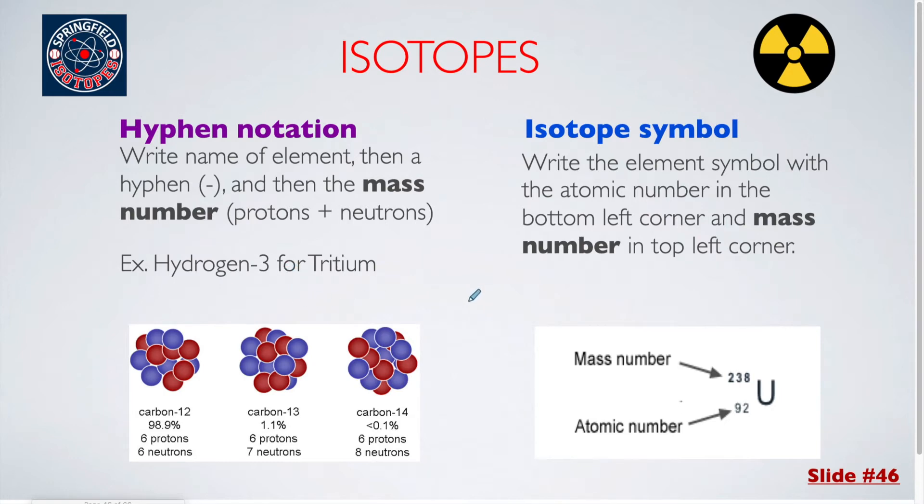An isotope symbol is where you write the elemental symbol with the atomic number in the bottom left corner, and the mass number in the top left corner. The isotope symbol gives you the most amount of information since you are also given the atomic number, so this one is sometimes a little more useful if you're trying to find the number of protons, neutrons, and electrons, since you don't have to look at a periodic table as well.